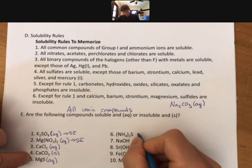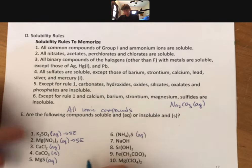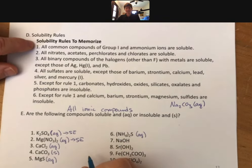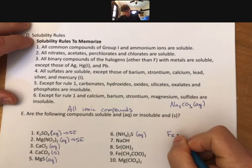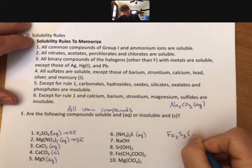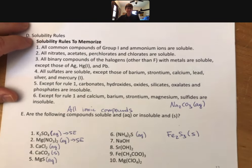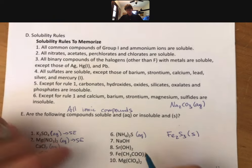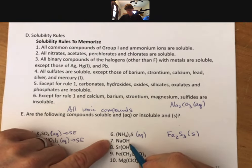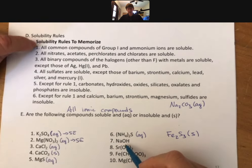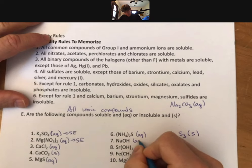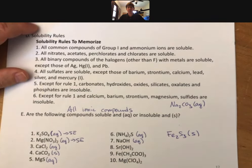Ammonium sulfide, also from the group one is soluble, but iron sulfide, iron three sulfide, would be solid. Now we get down to number seven. Number seven says sodium hydroxide. Everything with group one, everything with sodium is soluble. So stop at rule number one.